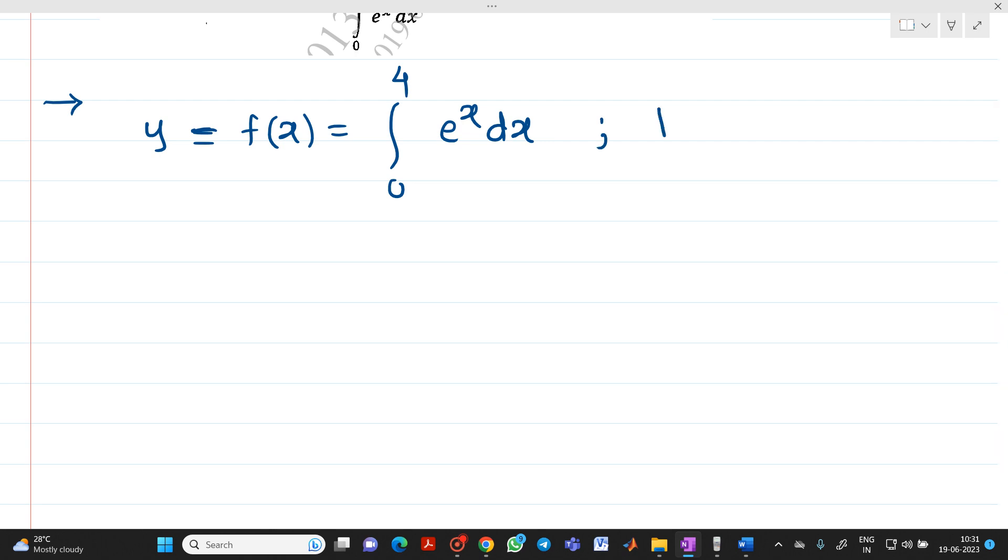The step size h will be equal to 1. Now what is the lower limit? From your integration, you will understand that lower limit x0 will be equal to 0 and upper limit will be equal to xn which is equal to 4.